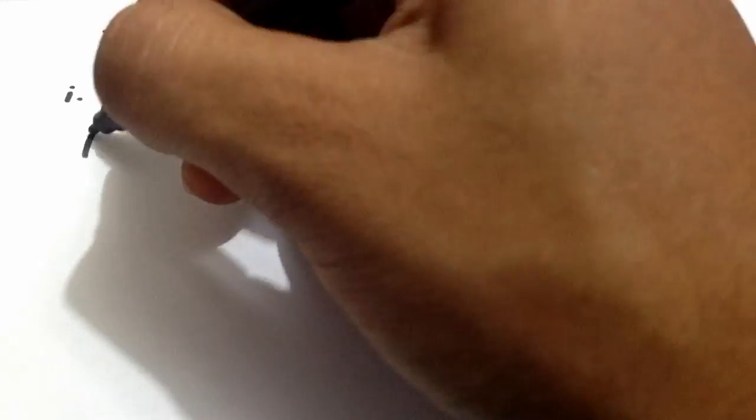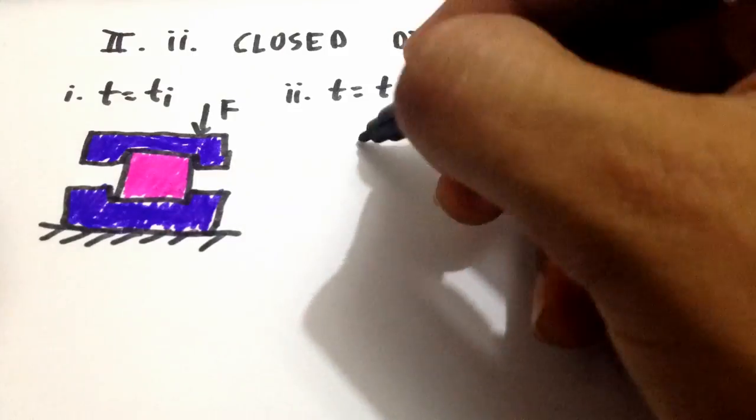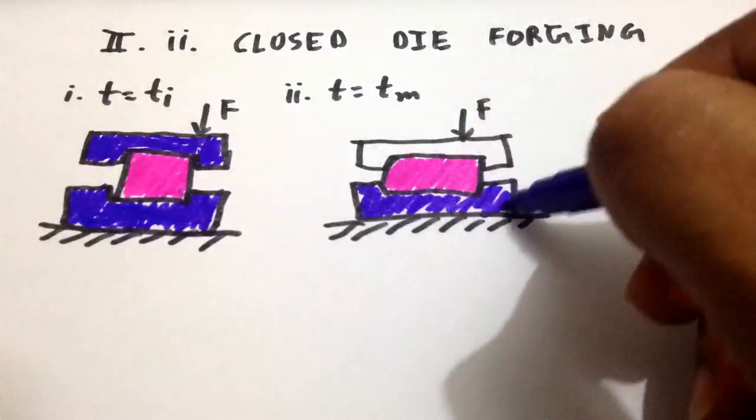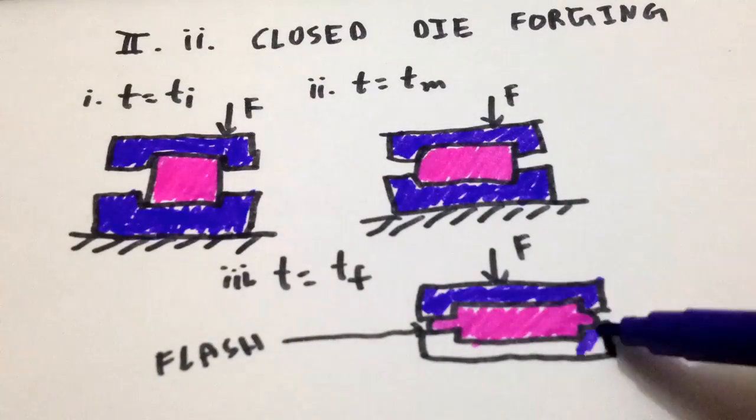Closed-die forging is performed with dies which contain the inverse of the required shape of the component. Initially, the casting board is placed between the two impressed dies. The die closes to its final position forming a flash. This flash is then removed in further operations like trimming.